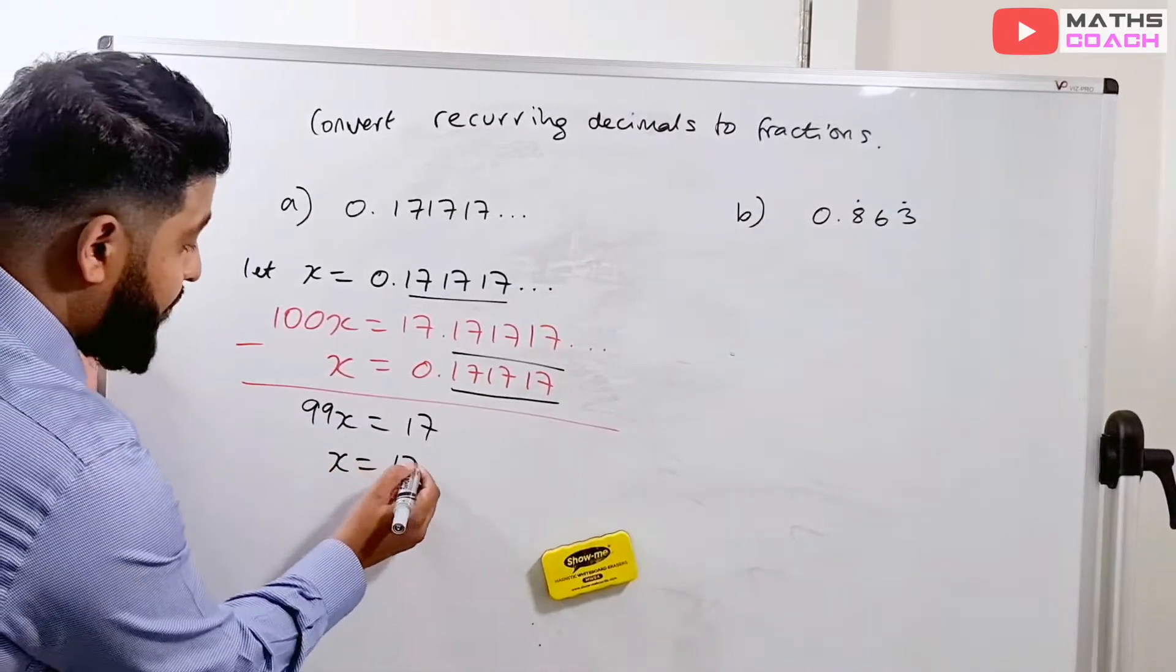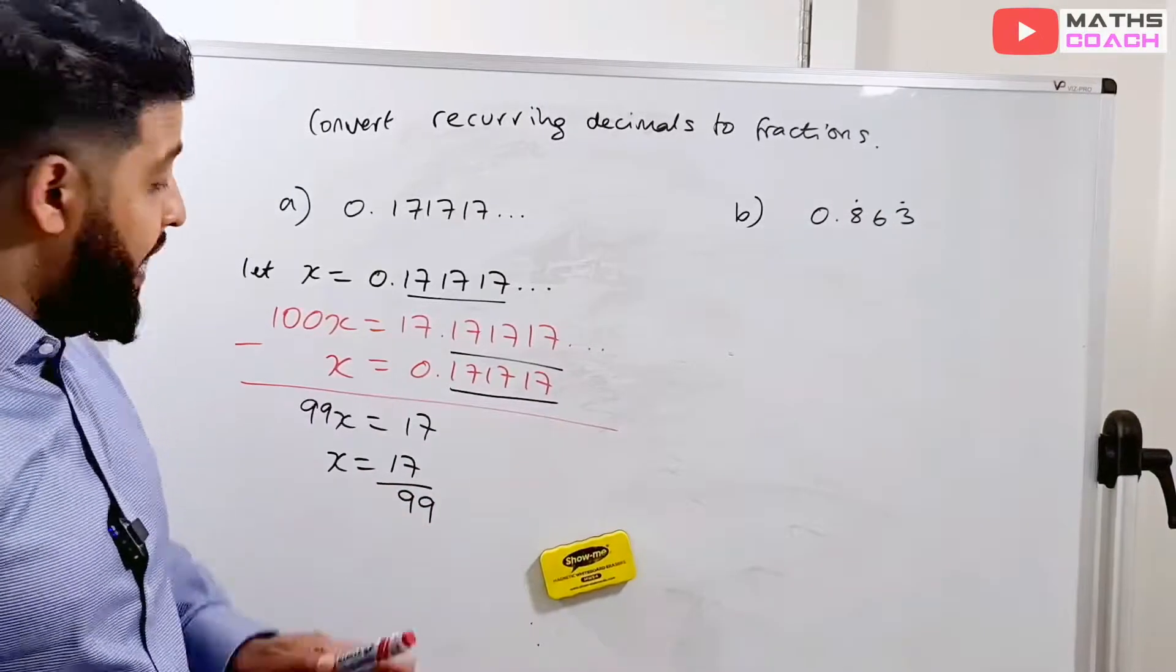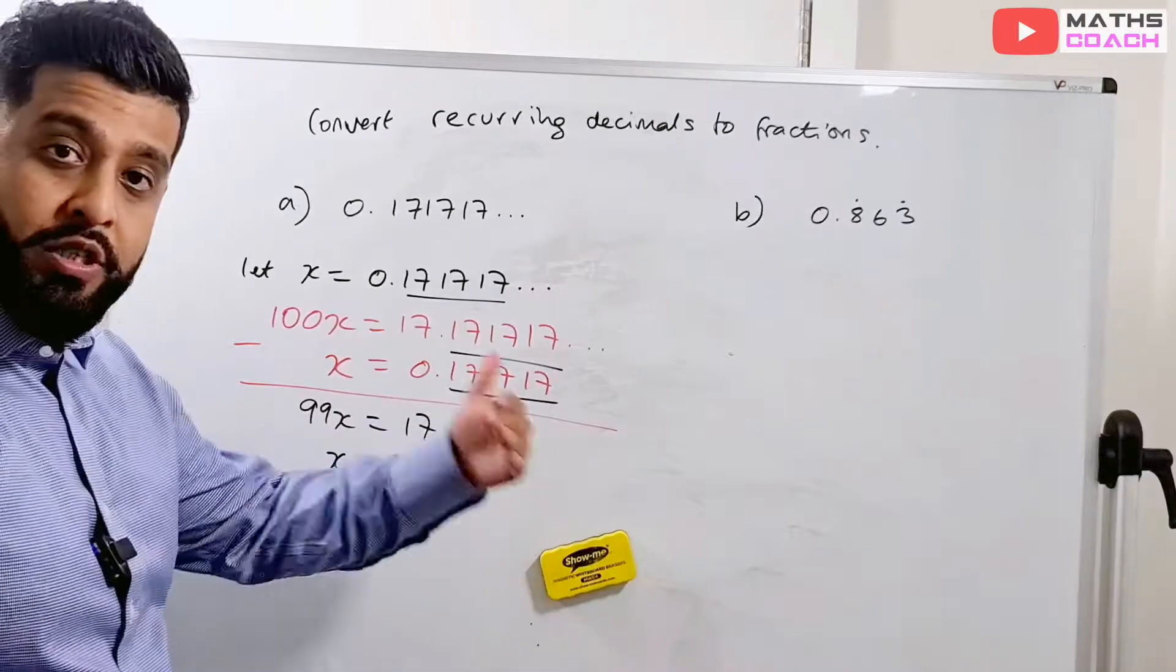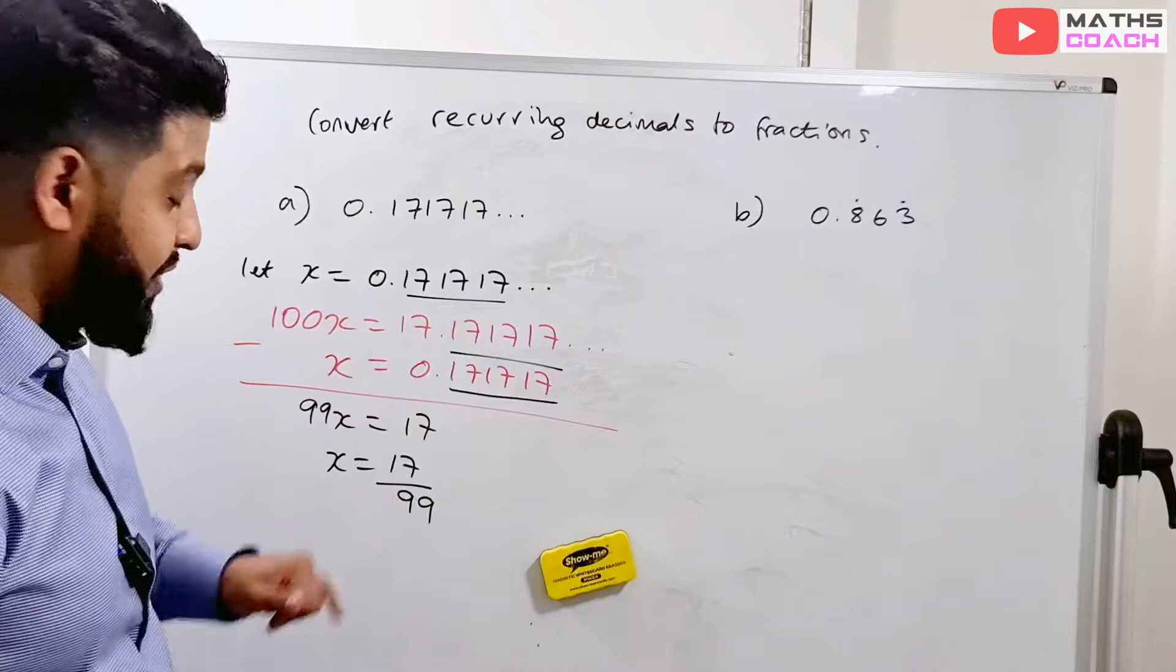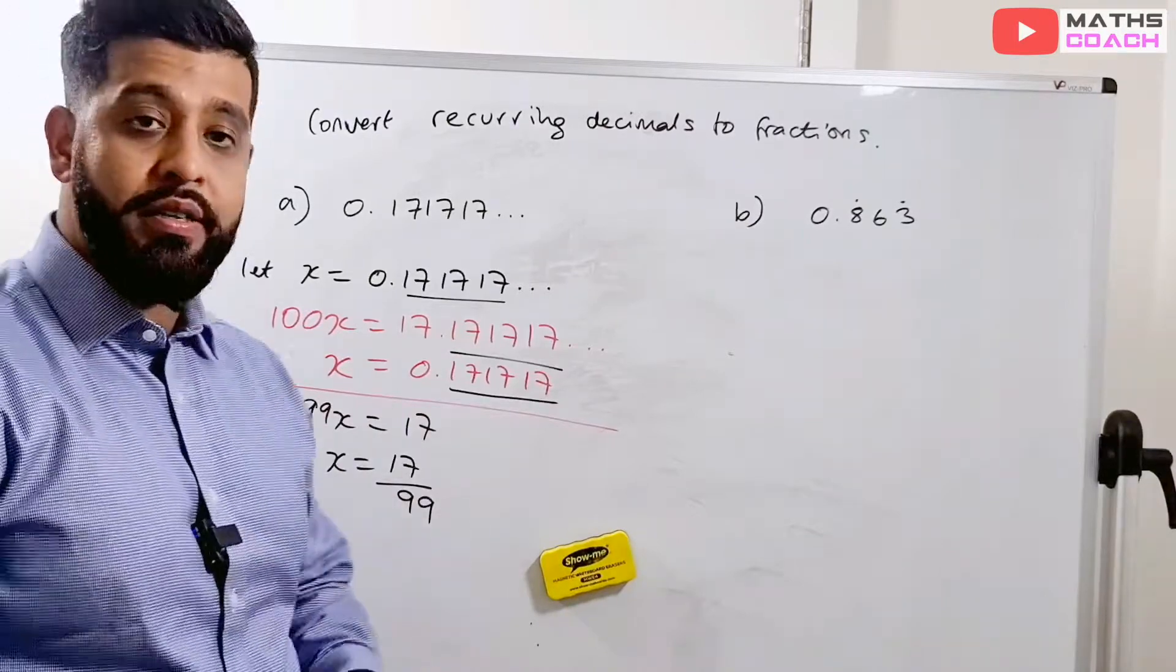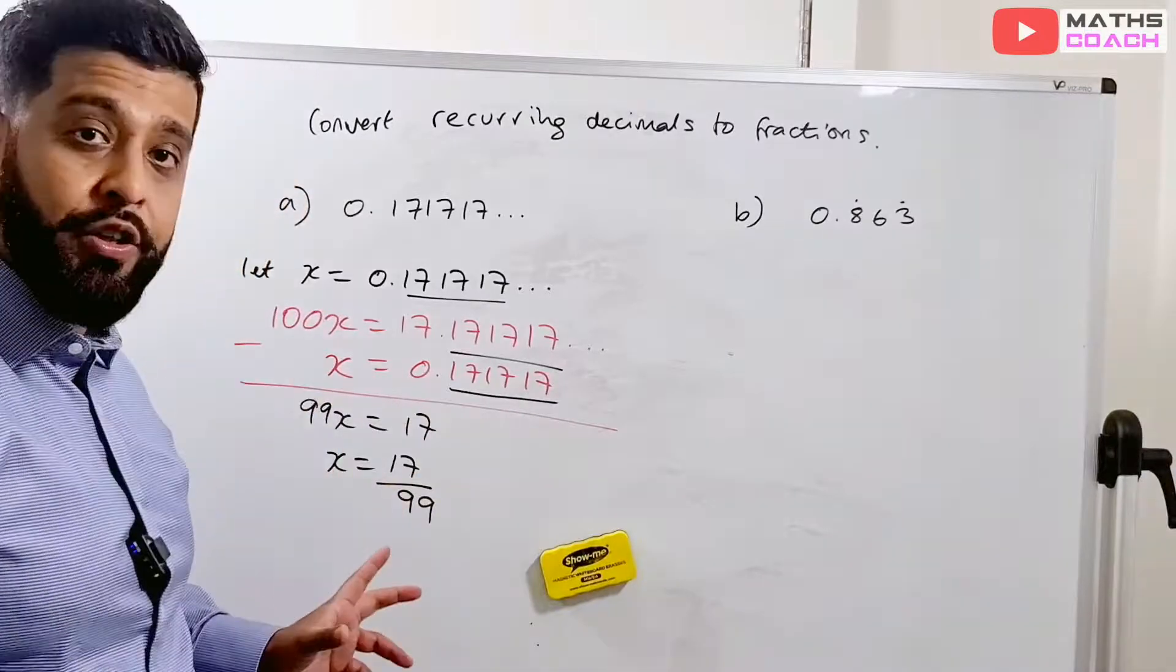So you're left with 99x is equal to 17. And therefore, you can rearrange that in terms of x. So 17 divided by 99. And sometimes you can cancel this down even further, you know, simplify the fraction. But in this case, there's nothing to simplify with because 17 is a prime number. And you can't divide both numbers by a common number. Hopefully, you got the hang of that one.